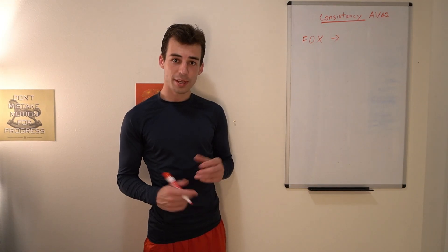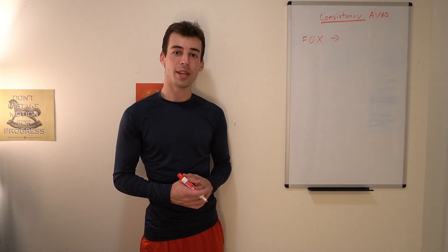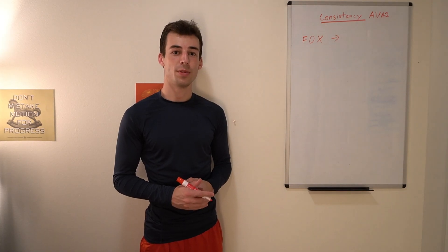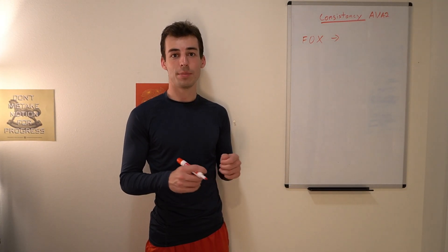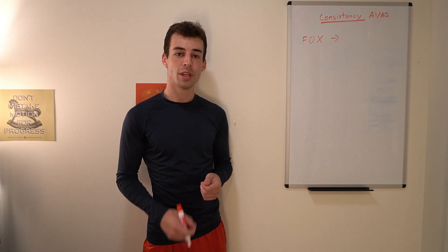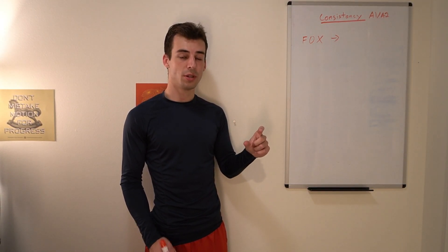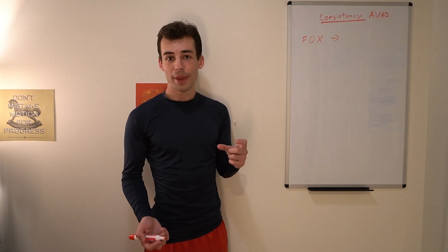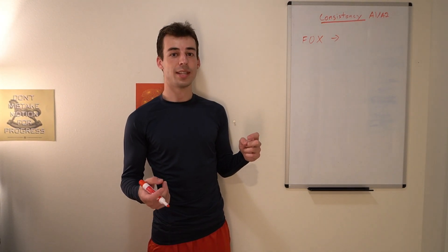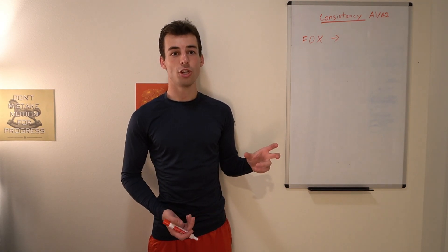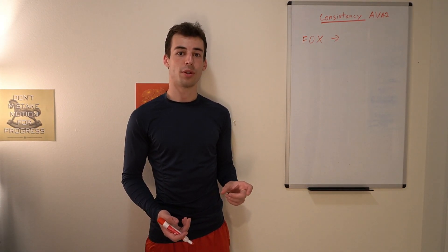In this problem we're given some initial string consisting only of uppercase English letters and we want to make the string consistent, which means we want to turn it all into the same character repeated multiple times. To do this we can pick some character in the string and change it. In problem A1 we can change any vowel to a consonant and any consonant to a vowel, but we can't change any consonant to an arbitrary other consonant.